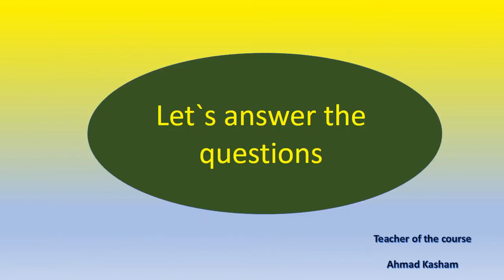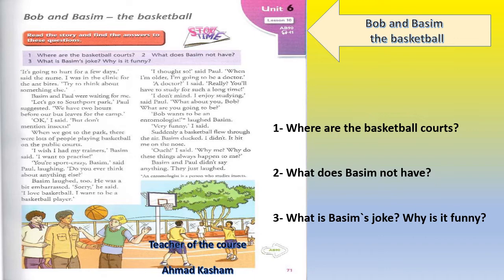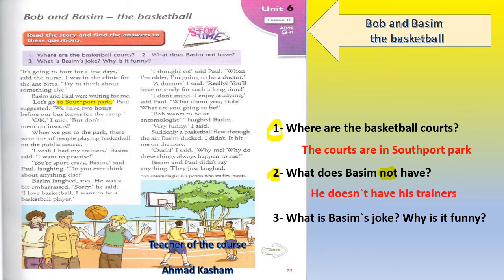Now my students, let's move to answer the three questions above the story. Question number one: Where are the basketball courts? You can find the answer here — 'To Southport Park.' So the answer should be: The courts are in Southport Park. Question number two: What does Basim not have? He needed something to play basketball. The answer is: He doesn't have his trainers.